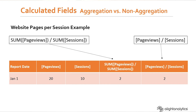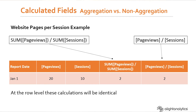By default, if we're looking at one row — just January 1st, one date — these calculations will do exactly the same thing, because whether it's an aggregated calculation or a non-aggregated calculation, it's only one row of data, so Tableau treats it exactly the same. For this example, we have 20 page views and 10 sessions, so both calculate to two pages per session. Tableau would treat these calculations the exact same.